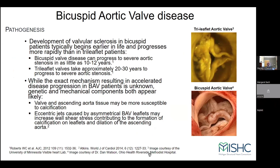The pathogenesis of disease in a bicuspid valve — valvular sclerosis in bicuspid — begins earlier in life. When I see a patient in their 50s, 60s, even early 70s, I'm triggered to look for this. Bicuspid valve disease can progress to severe AS in a short time frame, in 10 to 12 years. Tricuspid leaflet valves take approximately 20 to 30 years to progress to severe aortic stenosis. If you have a bicuspid valve, the progression of 0.1 per year is a bit more accelerated. There are genetic and mechanical components that appear very likely. The valve and ascending aortic tissue may be more susceptible to calcification — that's why we see heavy calcium burden in these patients.